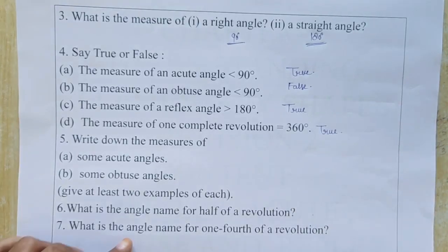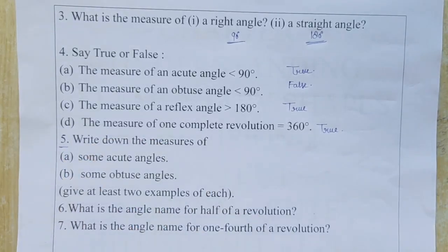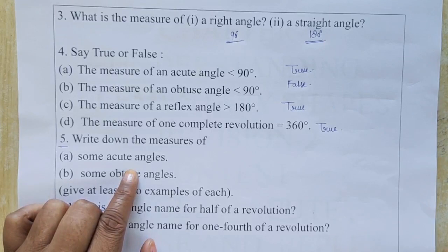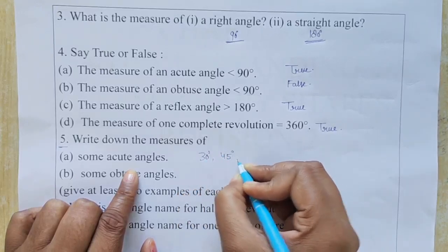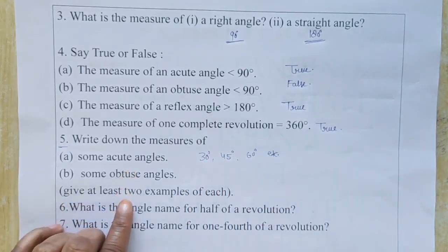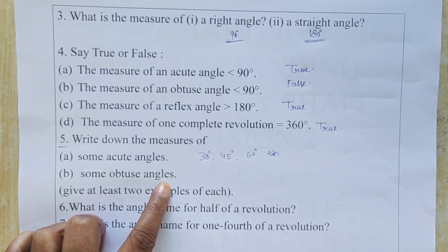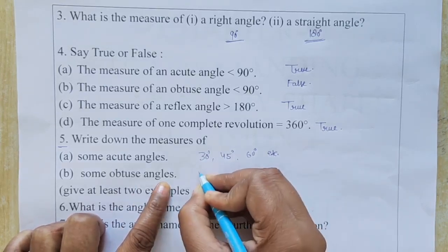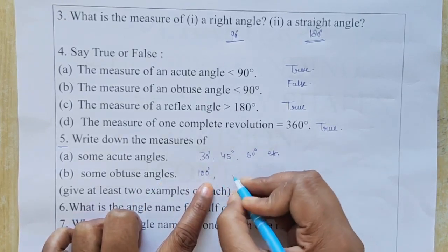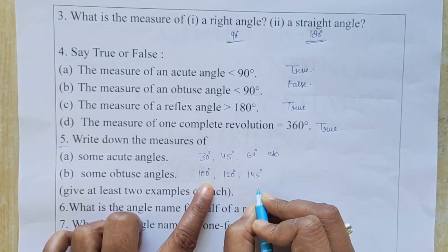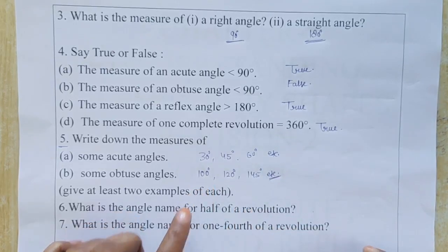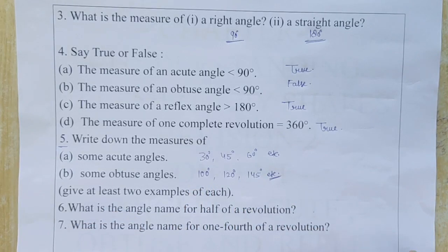Fifth question: Write down the measures of some acute angles. Any angle less than 90 degrees qualifies — for example, 30°, 45°, 60°. These are all examples of acute angles. Also write some obtuse angle examples. Obtuse angles are greater than 90 degrees — for example, 100°, 120°, 145° are all greater than 90°, so they are examples of obtuse angles. You can write other examples too; give at least 2 examples of each.